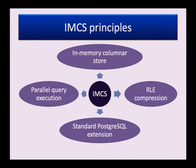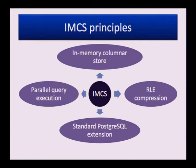First of all, IMCS is not an alternative way of storing data. Data is still stored in Postgres; IMCS just creates an in-memory copy of this data. So it does not have to deal with redundancy or consistency — that is provided by Postgres. Memory is very cheap now, and a computer with a terabyte of memory is not exotic. So we can load quite large sets of data and manipulate them in memory without paying significant disk I/O overhead.